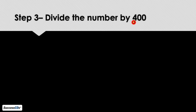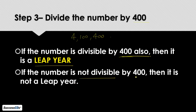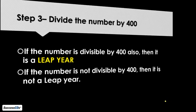If the number is also divisible by 100, then Step 3 is: we will divide the number by 400. Again there are two options. If the number is exactly divisible by 400, then it is a leap year. If the number is not divisible by 400, then it is not a leap year. So we have two leap year categories: numbers divisible by 4 but not 100, and numbers divisible by 4, 100, and 400.